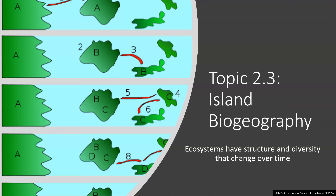Hello, everybody. Welcome back. We're going to focus in on AP Environmental Science Topic 2.3, which is the idea of what's called island biogeography. Keep in mind that our enduring understanding throughout the entirety of Unit 2 is that ecosystems have structure and diversity that change over time.